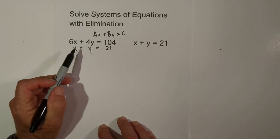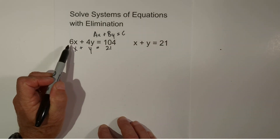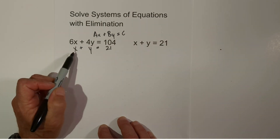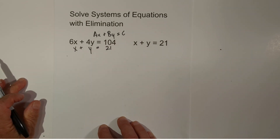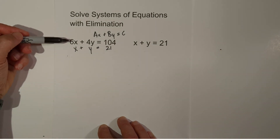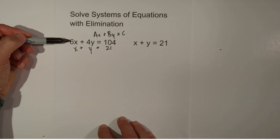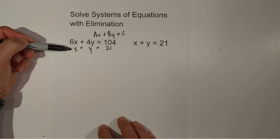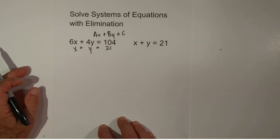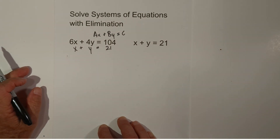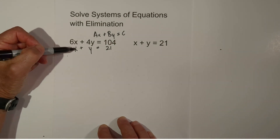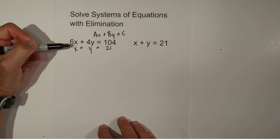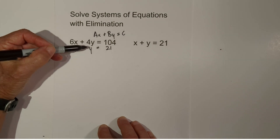What we're going to do is move this equation underneath, kind of like it's a subtraction problem. Now what we need to do is eliminate either an x or a y, and we're going to have to multiply either this equation, the other equation, or both by a number so that we can eliminate something.